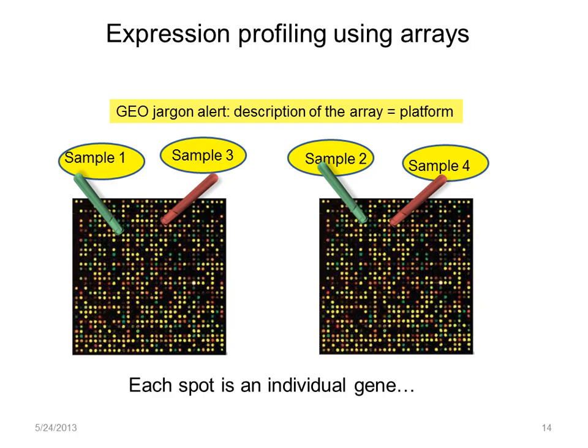The samples are applied in pairs. A sample from TNF-plus and TNF-minus mice is applied to each microarray. These arrays, sometimes called chips, are usually purchased from biotech companies, and later we will see that in GEO they are called platforms.